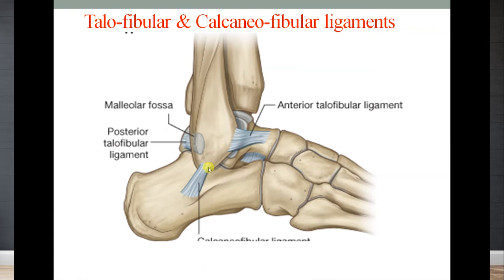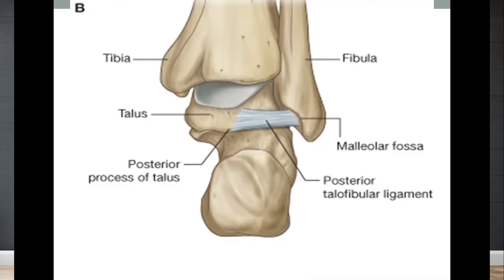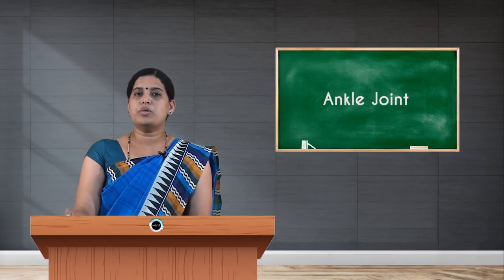The lateral ligaments are three in number. The calcaneofibular ligament goes from the lateral tubercle of the calcaneus to the fibular lateral malleolus. Then there are the anterior and posterior talofibular ligaments. This slide shows the posterior talofibular ligament attaching from the malleolar fossa on the lower end of the fibula to the posterior process of the talus.